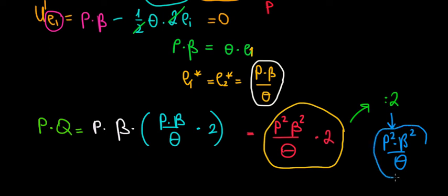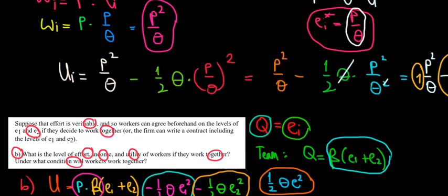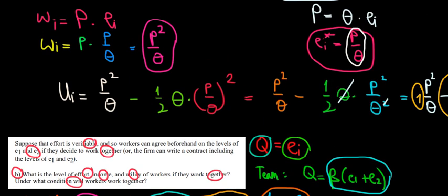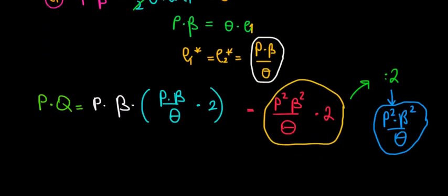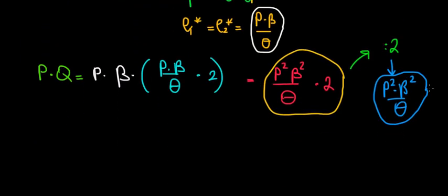Let's compare this result to the previous result. This is the income, whereas before the income was p squared divided by theta. We notice the income increased by the coefficient beta squared, which again shows the effect of working in a team - it leads to more income produced.